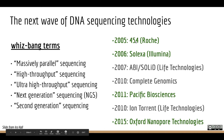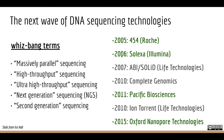The next wave of sequencing technologies kicked off in 2005 with a technology called 454 sequencing, originally founded by Jonathan Rothberg, who later created ion torrent sequencing. 454 was bought by Roche. These sequencing technologies have all sorts of terms in the literature — massively parallel, ultra high throughput, next generation, second generation — I think of it as just modern DNA sequencing.